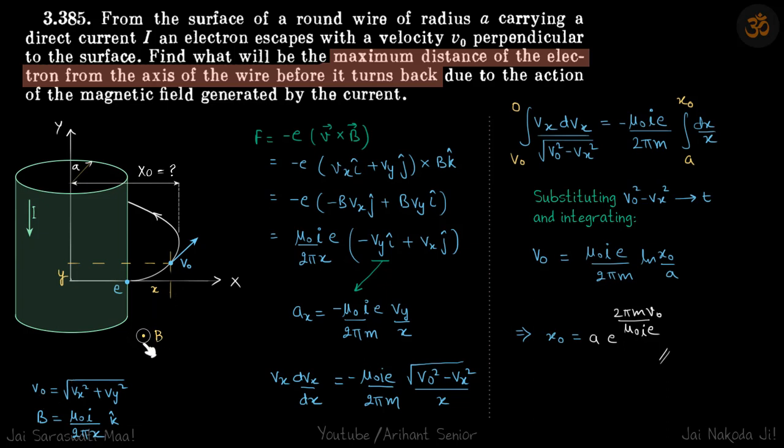Second is magnetic field for a current carrying wire at a distance x is mu0 i by 2 pi x. And because the current is flowing down, in this case it will be k cap. Now let's do this problem.